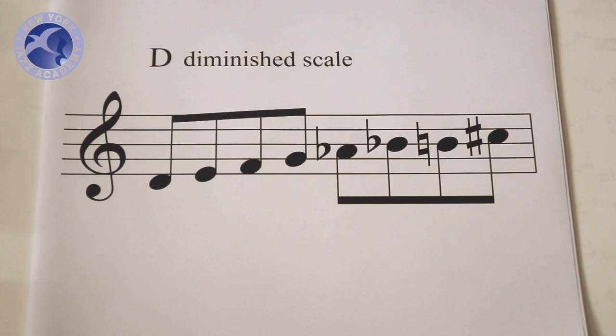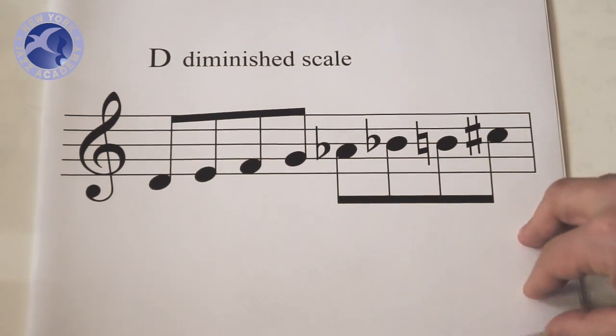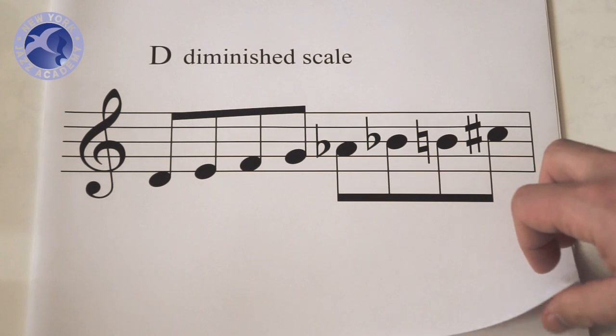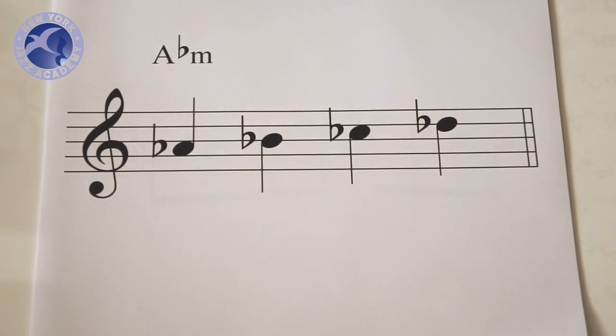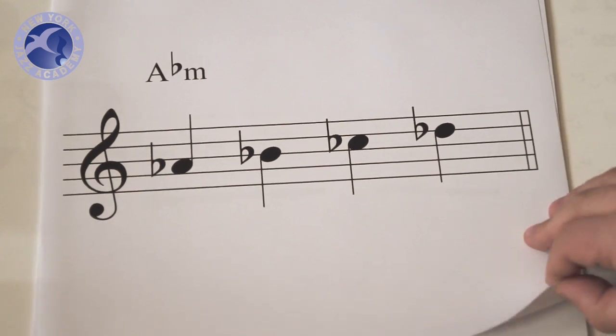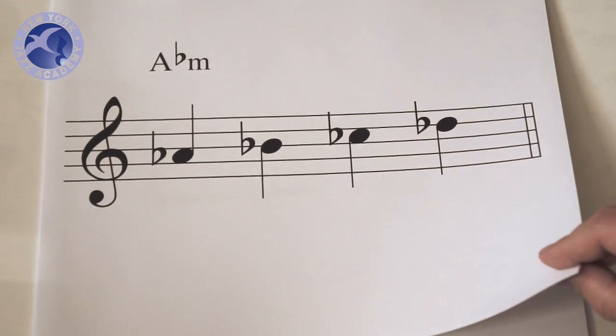Here we also need to review the diminished scale real quick. It's got the same bottom fragment as D Dorian minor where it implies D minor on the bottom but the top fragment implies A flat minor. That's the kicker right there.